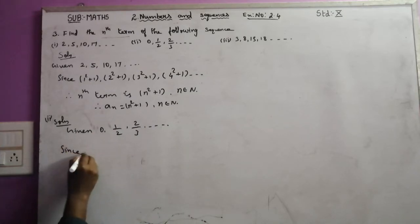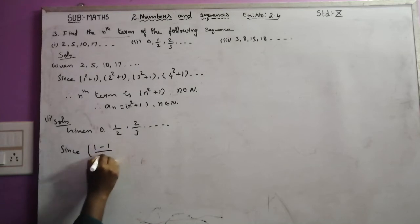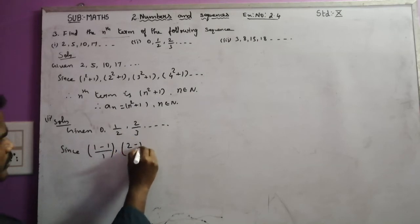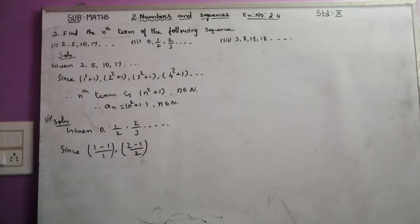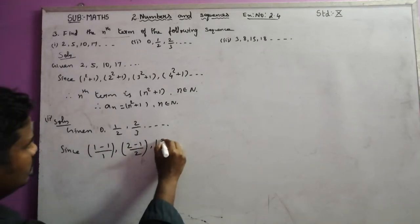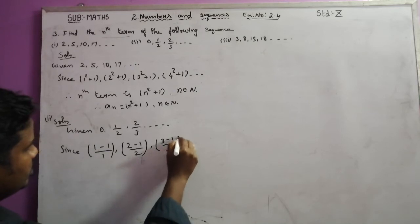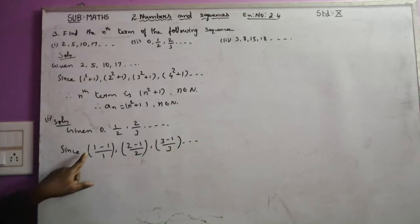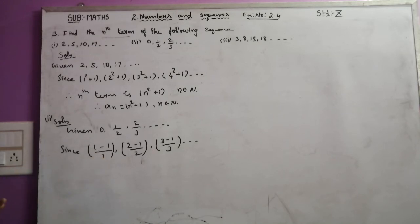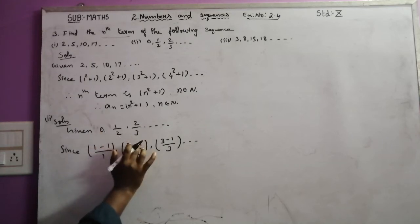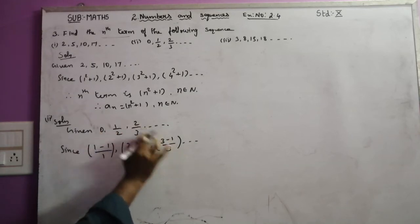Since: 0 equals (1 minus 1) divided by 1. Next is 1/2 equals (2 minus 1) divided by 2. Next is 2/3 equals (3 minus 1) divided by 3. So: 1 minus 1 is 0 over 1 equals 0; 2 minus 1 is 1 over 2; 3 minus 1 is 2 over 3.